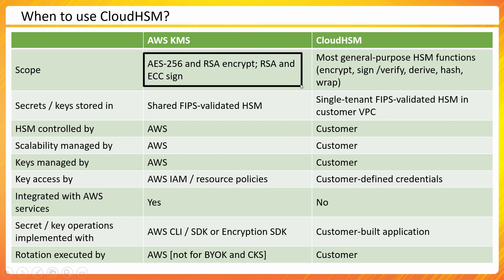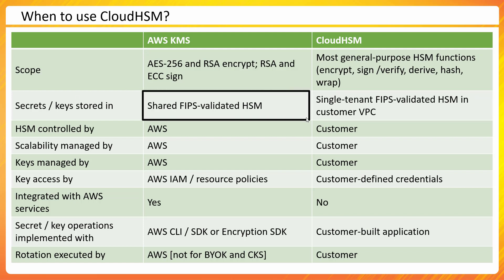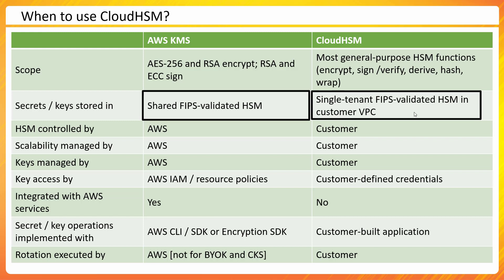Now let's quickly compare the differences between KMS and Cloud HSM. KMS has a specific scope: AES-256, RSA encrypt/decrypt, and ECC sign — these are standard encryption algorithms. Cloud HSM is a more general-purpose HSM supporting functions like encrypt, sign, verify, derive, hash, and wrap — very specific security operations. For key storage, KMS uses a shared FIPS-validated HSM, whereas Cloud HSM uses a single-tenant device.